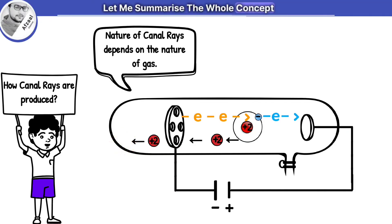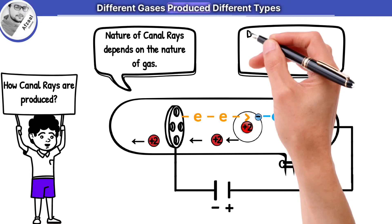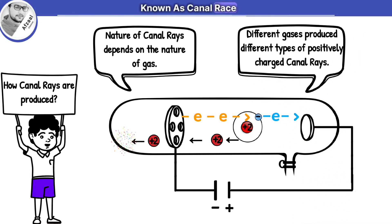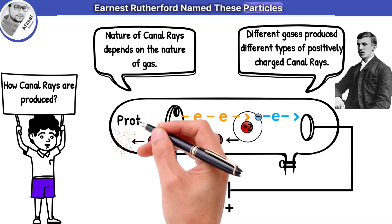Let me summarize the whole concept. Different gases produced different types of positively charged particles that are known as canal rays. Later in 1920, Ernest Rutherford named these particles as protons.